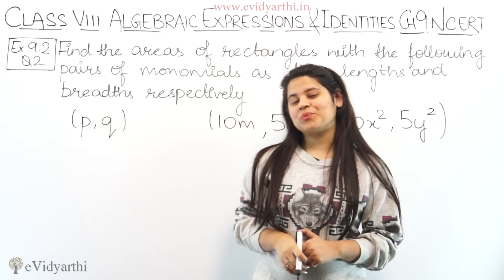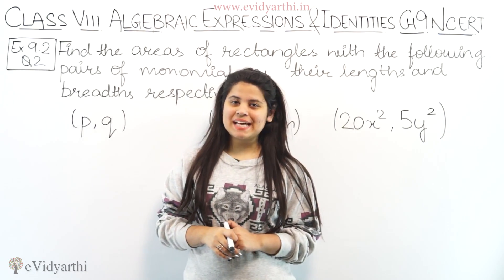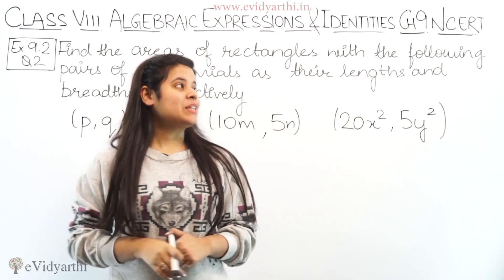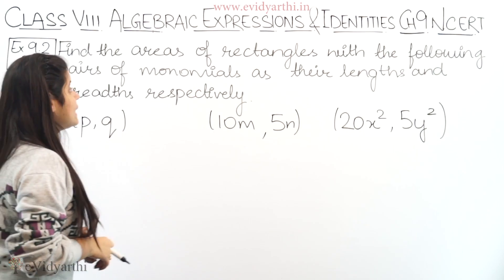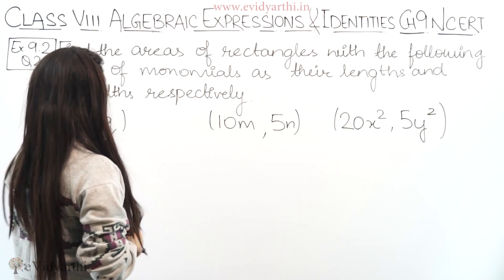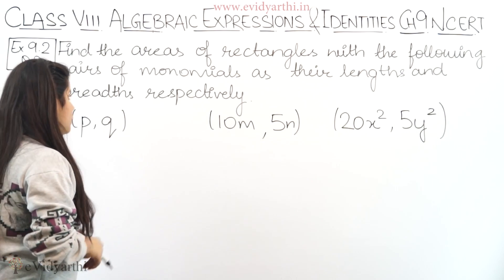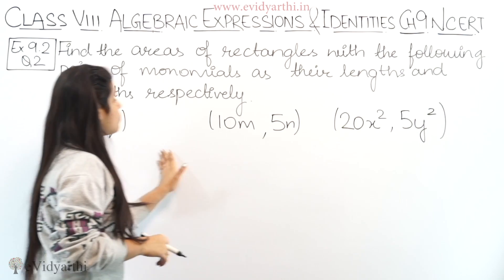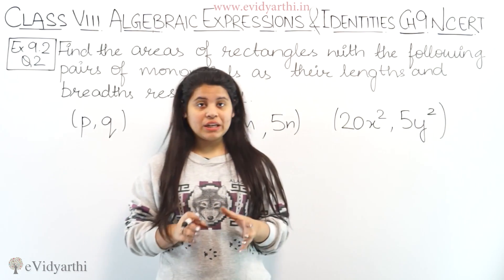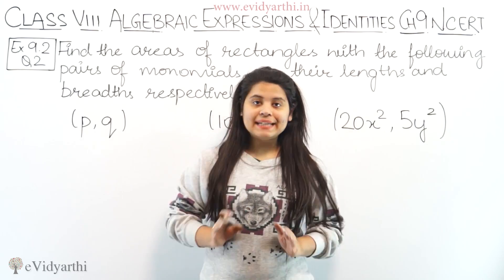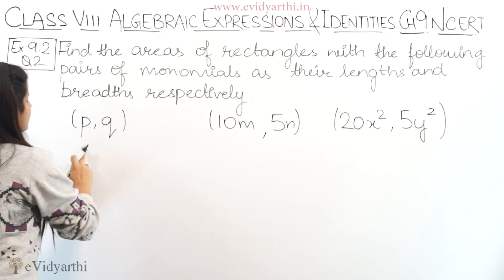Hello everyone, this is Mansi from Arekathy Thoughts, coming to question number 2, Exercise 9.2. The question says: find the areas of rectangles with the following pairs of monomials as their length and breadth respectively. You have to treat each pair as length and breadth and find the area of the rectangle.